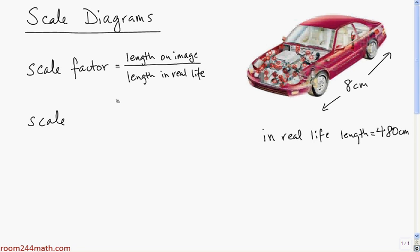For this example, the length on the image is 8 centimeters, and the length in real life is 480 centimeters. It's very important to make sure the units are the same. If the car's length was given as 4.8 meters, we'd first convert it to 480 centimeters. Then, 8 centimeters over 480 centimeters - the centimeters cancel out, and the scale factor becomes unitless. That's quite important. There's never any unit associated with a scale factor.